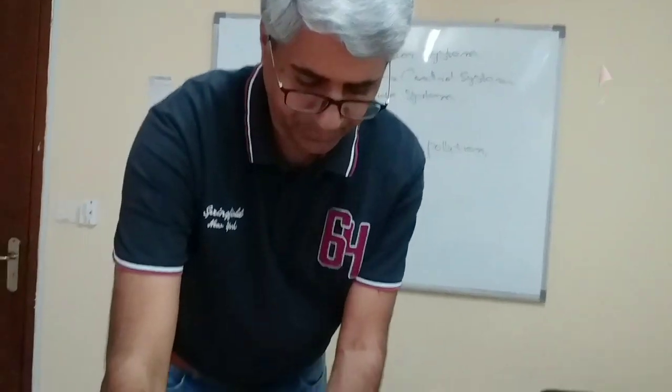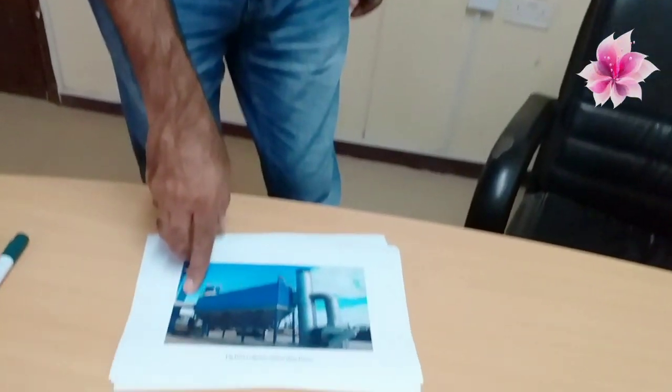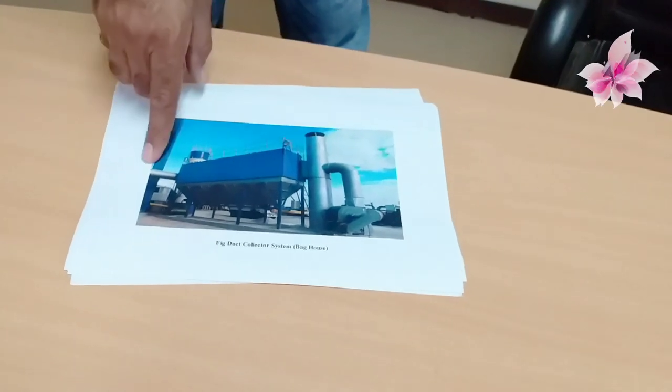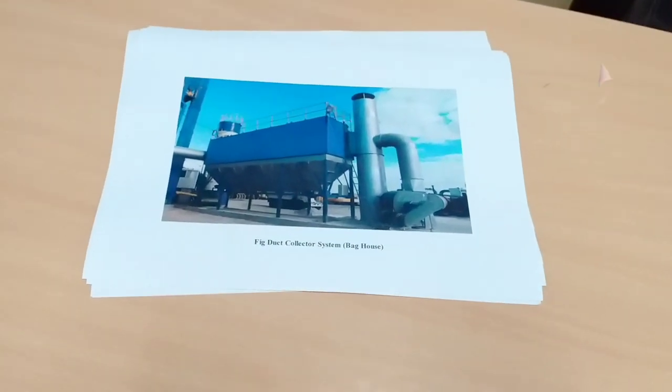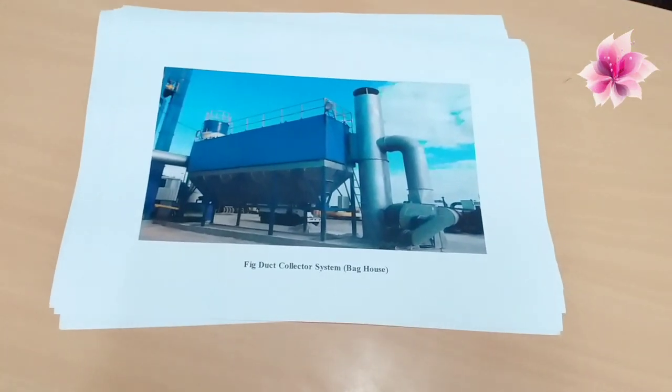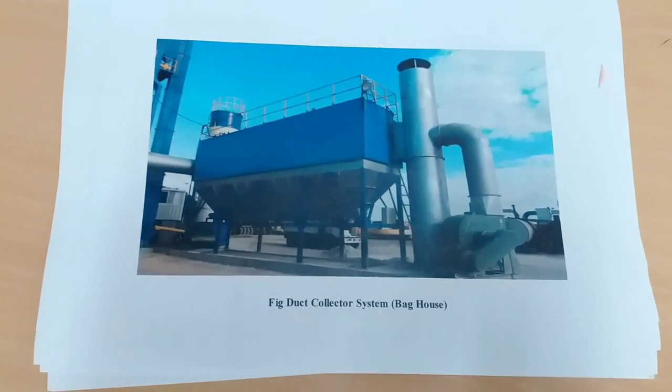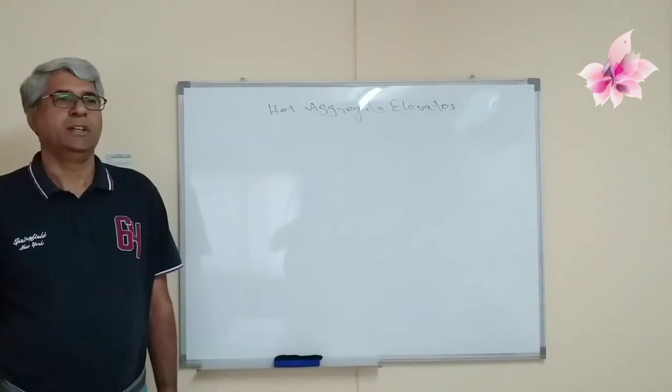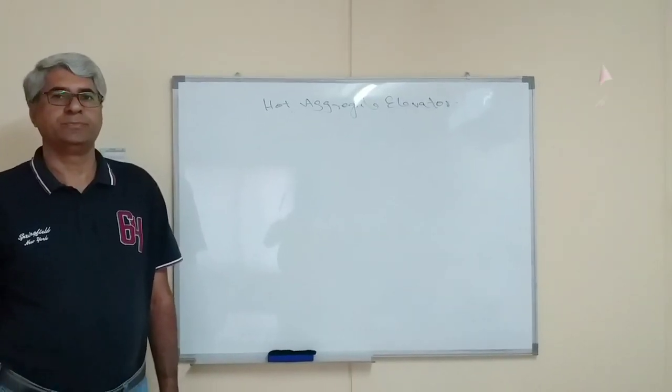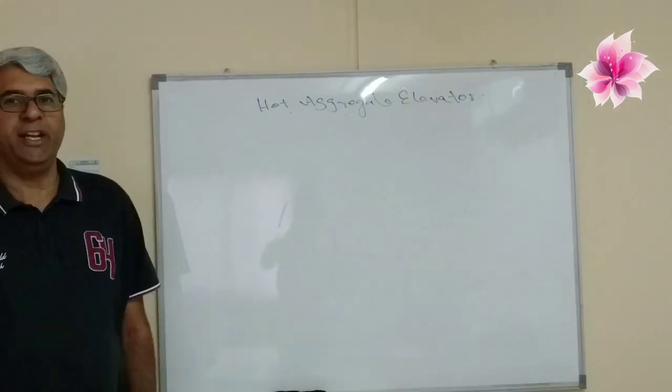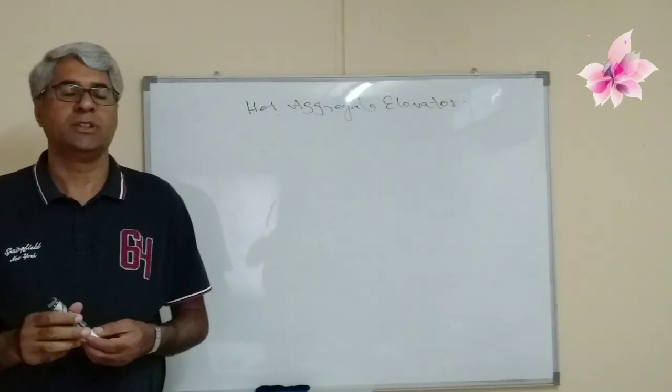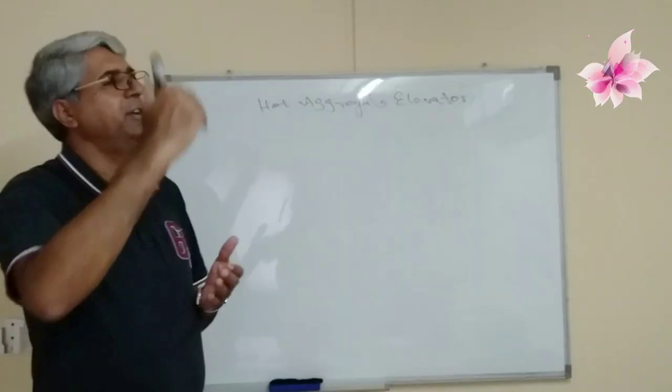This dust collector is shown over here. You can see this picture for this collection of this dust and its block diagram. When I had made it I had already shown it to you about this dust collector. The hot aggregates coming from the dryer here are elevated.